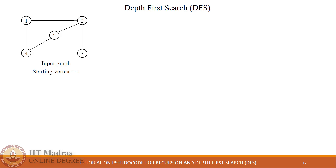Let's consider the given graph and execute depth-first search using starting vertex 1. Since 1 is the starting vertex, the root node in the tree will be 1. All other nodes of the graph will be unvisited nodes — the color green represents unvisited nodes and the yellow color represents the current node.